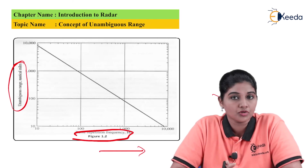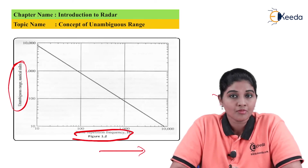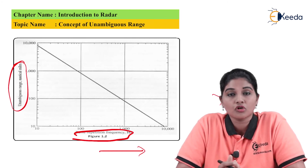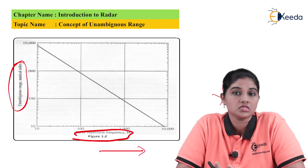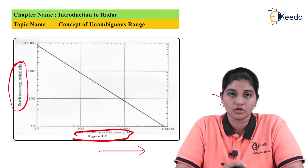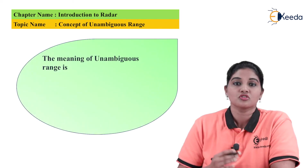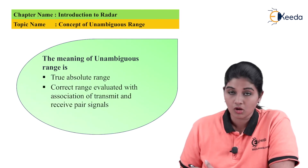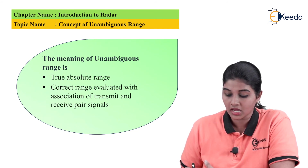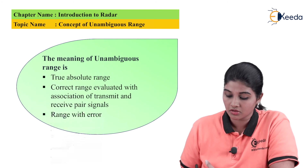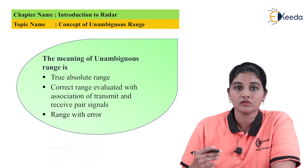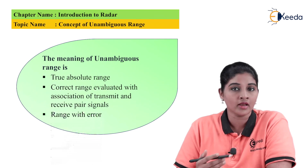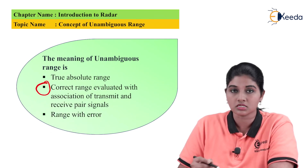Unambiguous range is the true or actual range, while ambiguous range is the range with error. It is not always necessary that unambiguous range equals the true range. Now for our first MCQ: the meaning of unambiguous range is — Option A: true absolute range; Option B: correct range evaluated with association of the transmit and receive pair signal; Option C: range with error. The correct answer is Option B, because unambiguous range is the true range obtained when the correct echo signal is associated with the correct transmitted pulse.